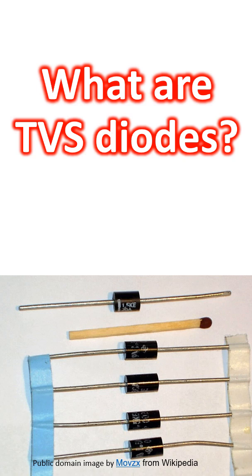TVS diodes, or transient voltage suppression diodes, are electronic components used to protect electronic devices from voltage spikes induced on connected wires.